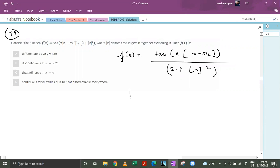Now let's try to plot the graph of tan x. This is 0. This is pi by 2. This is minus pi by 2. We know that graph goes like this.